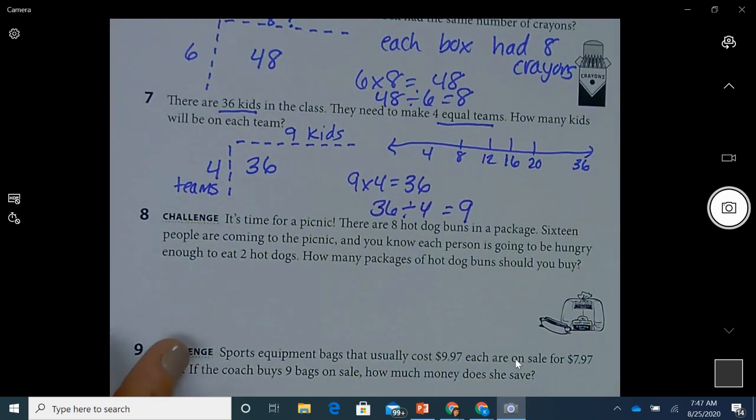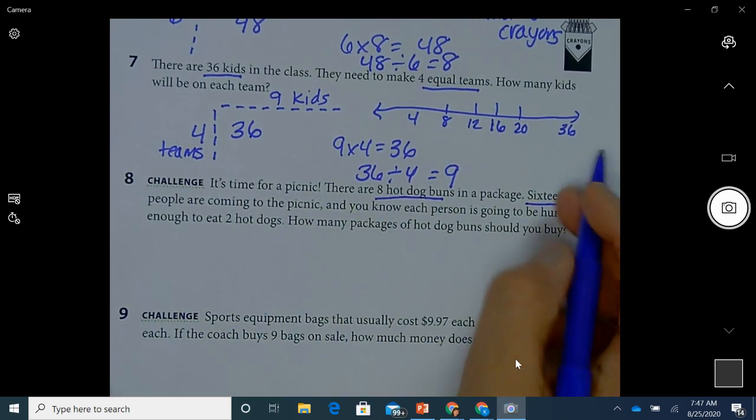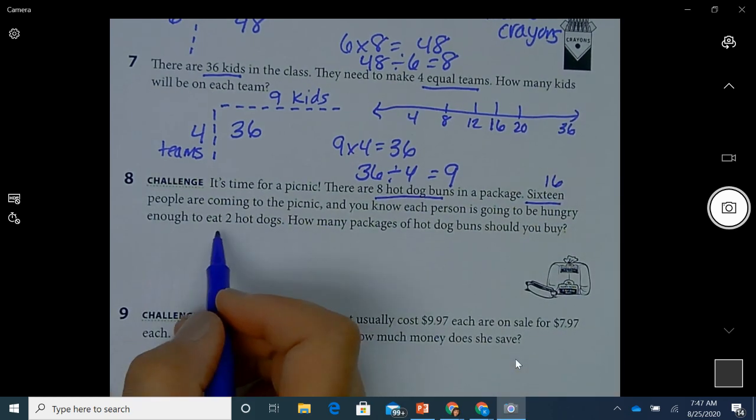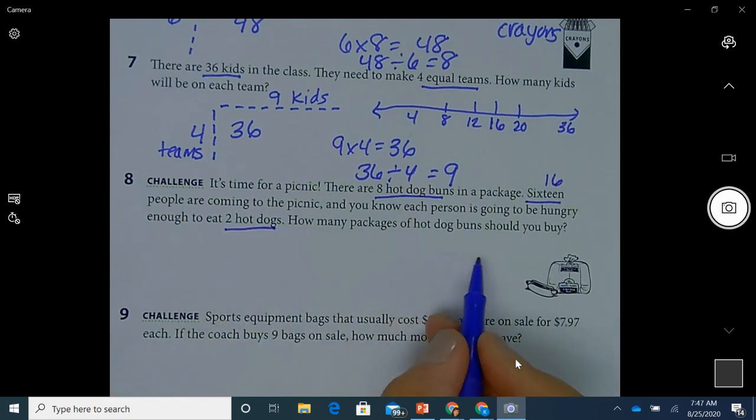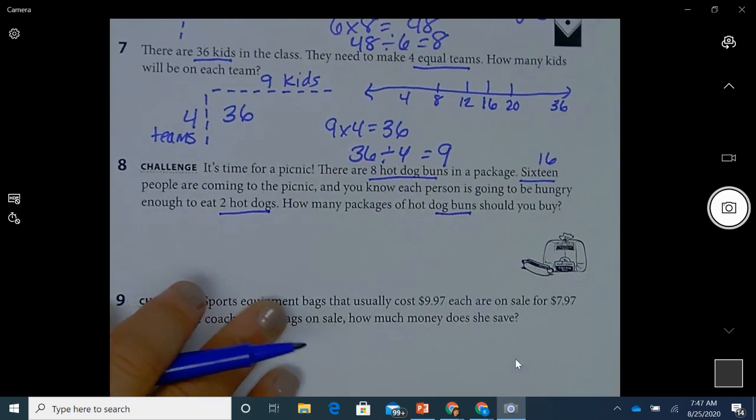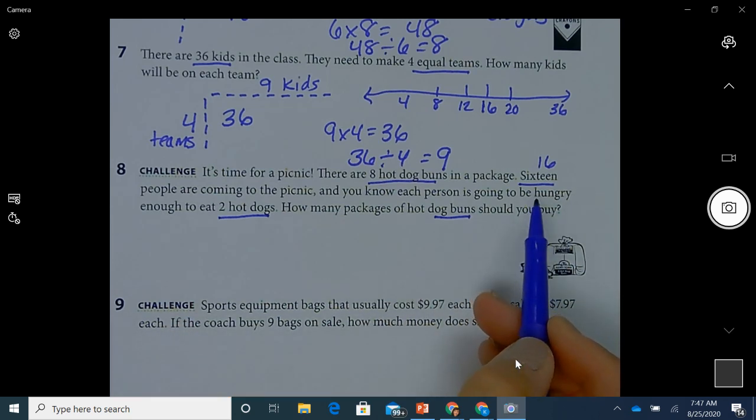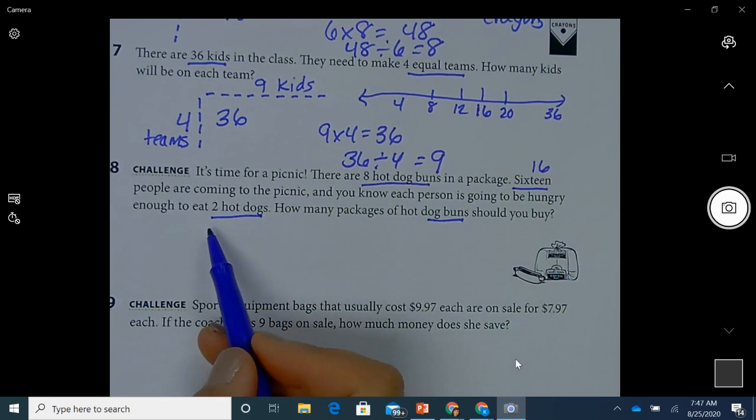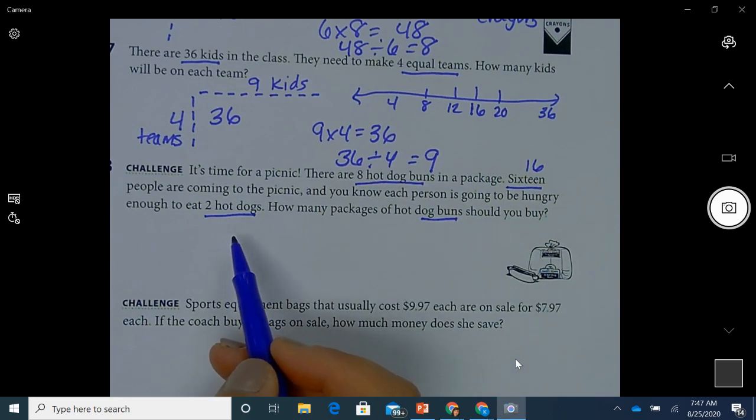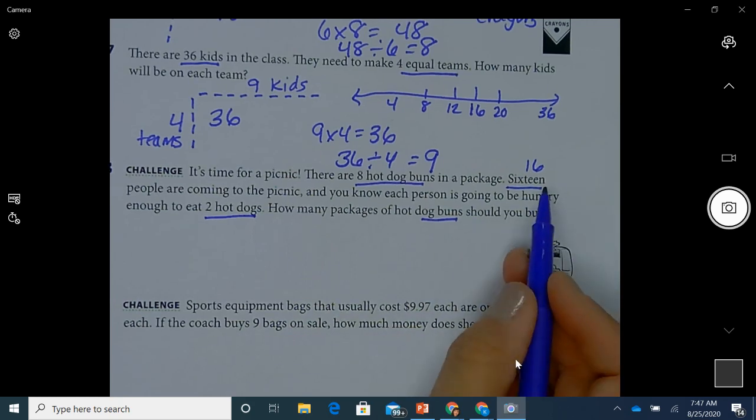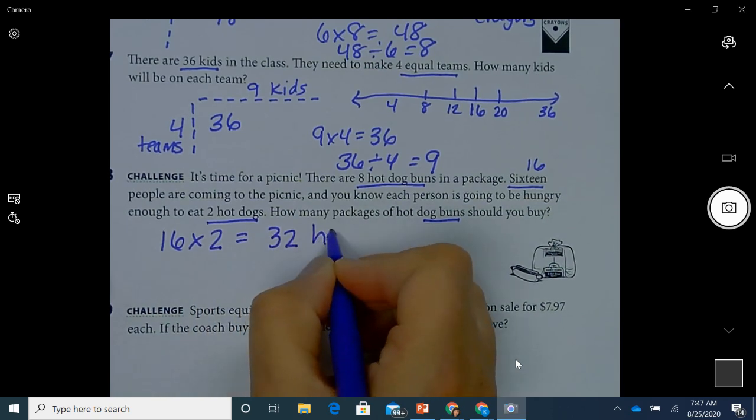Okay. We're going to do one of the challenges. It says it's time for a picnic. There are eight hot dog buns in a package, 16 people. I'm going to write the number 16. So I remember that 16 people are coming to the picnic and you know, each person is going to be hungry enough to eat two hot dogs. How many packages of hot dog buns should you buy? So I'm not looking at hot dogs. I'm looking at hot dog buns. So, I'm trying to think if there are 16 people and you know, each person is going to be hungry enough to eat two hot dogs. So I know the 16 people, they're going to do two hot dogs. So probably I need two buns per person. So I could think of 16 times two equals 32 hot dog buns.